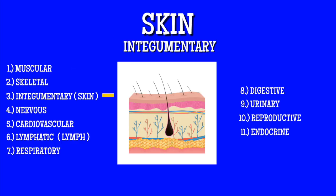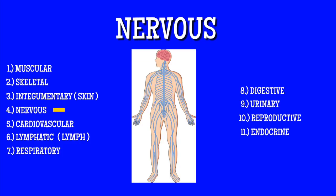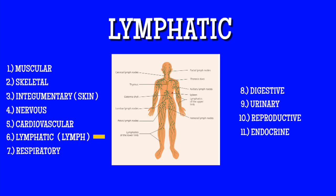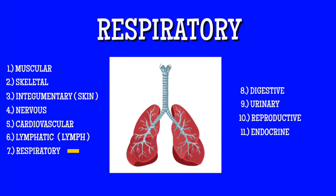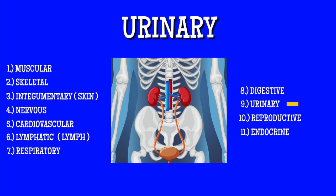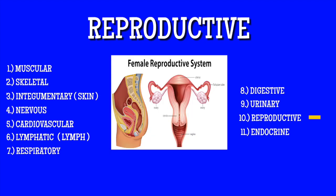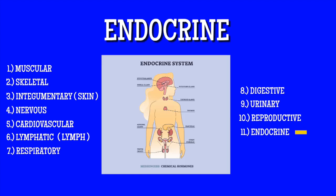Muscular, skeletal and skin, integumentary, nervous, cardio and limb, lymphatic, respiratory, digestive, urinary, reproductive and the endocrine.